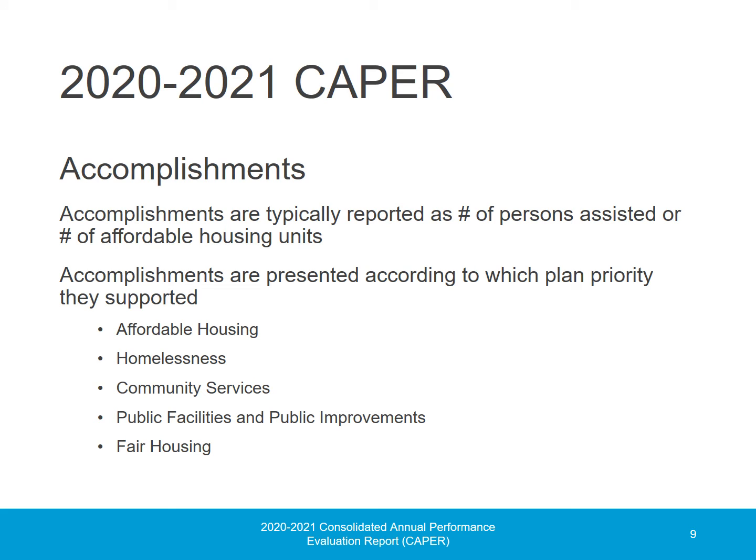The accomplishments reported in the CAPER are typically reported as the number of persons assisted or the number of affordable housing units constructed or rehabilitated. The accomplishments are grouped by which priority they support, determined in consultation with the community in the City's Five-Year Consolidated Plan. The priorities for the 2020 CAPER are affordable housing, homelessness, community services, and public facilities and public improvements. The CAPER is also used to report the City's efforts in removing barriers to fair housing.